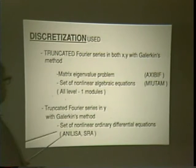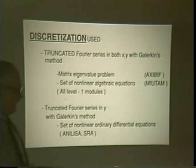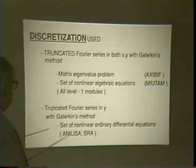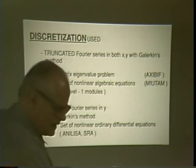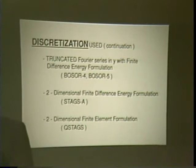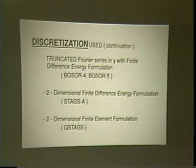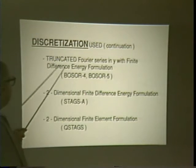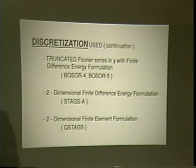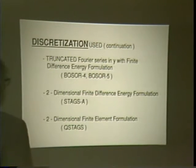Such codes include Annelisa, which I shall describe in more detail in the third lecture. SRA is a code developed by Jerry Cohen; he has a newer one called Phasor. There is also another formulation in the same class: you use a truncated Fourier series in the y direction but formulate the resulting problem in a finite difference energy formulation — that is the BOSAR family. BOSAR 4 and BOSAR 5 are the most recent members from Dave Bushnell.